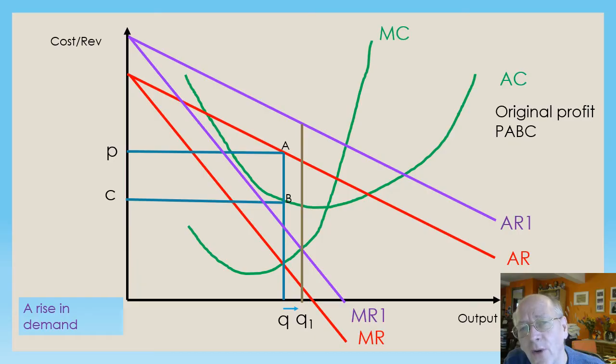So in order to find the new quantity, I need to find where the new MR curve, the purple one, cuts the MC curve, the green one, and that's going to be at quantity Q1.